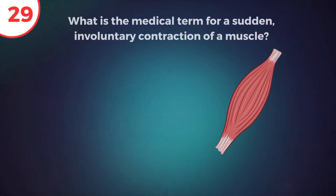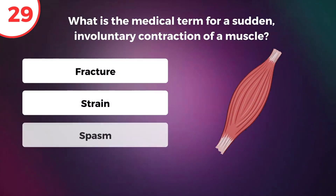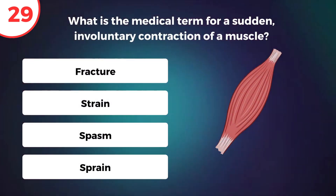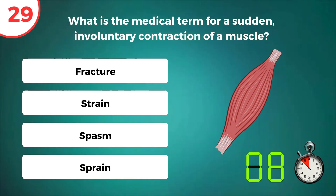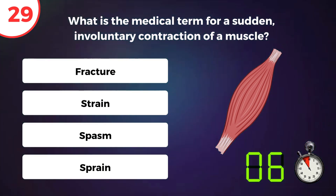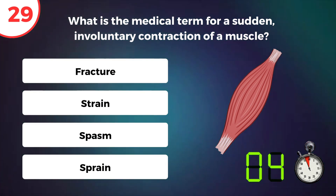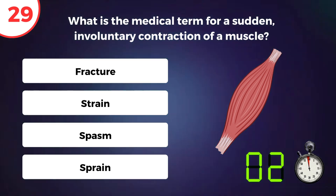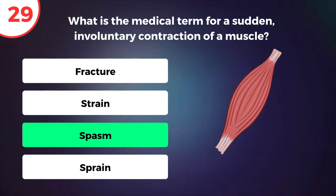What is the medical term for a sudden involuntary contraction of a muscle? Spasm.